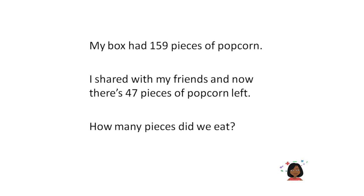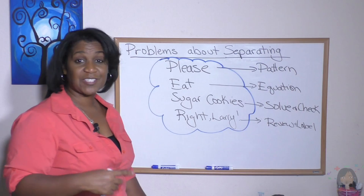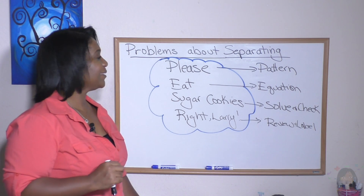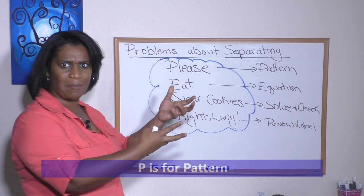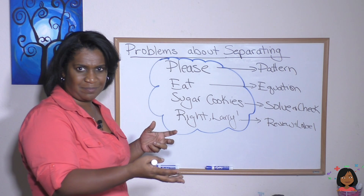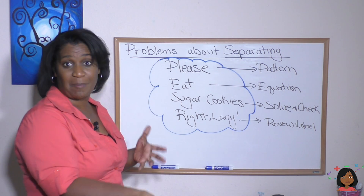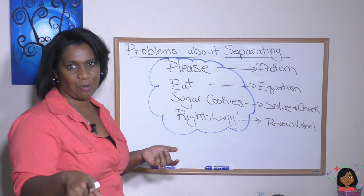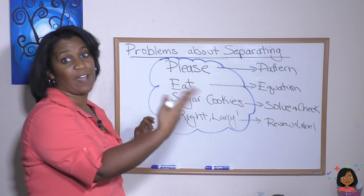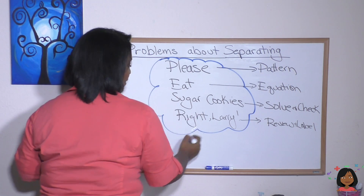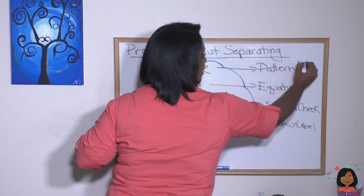My box had 159 pieces of popcorn. I shared with my friends; now there's 47 pieces of popcorn left. How many pieces did we eat? Let's apply our surefire method. P is for pattern. So what's the pattern here? I had a certain amount of popcorn, we ate some, and now we have a certain amount left. That sounds like a subtraction pattern — beginning amount minus some went away, and now we have what remains. So there is a subtraction pattern.